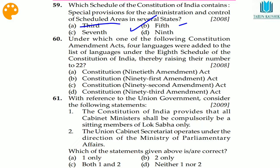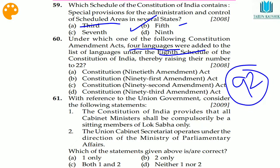Question 60: under which constitutional amendment act were four languages added to the Constitution? The answer is the 92nd Amendment Act, which added four languages to the Constitution.